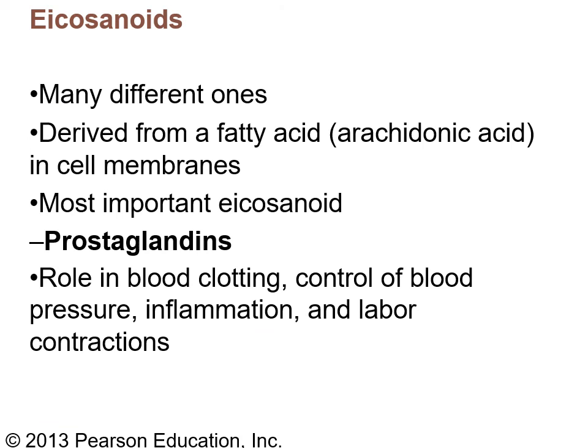Eicosanoids are derived from fatty acids — specifically from arachidonic acid. The most important eicosanoids are involved with inflammation. Prostaglandins are inflammatory molecules that also play a role in blood clotting, blood pressure control, and labor contractions. I'll cover them more in the immune chapter. Just know that they fall in the fat or lipid category.